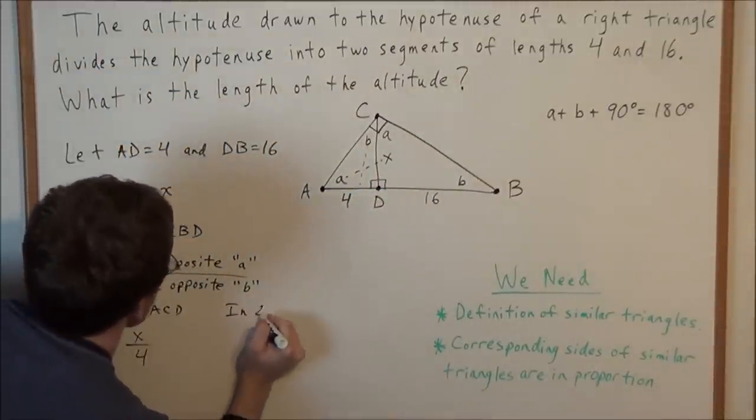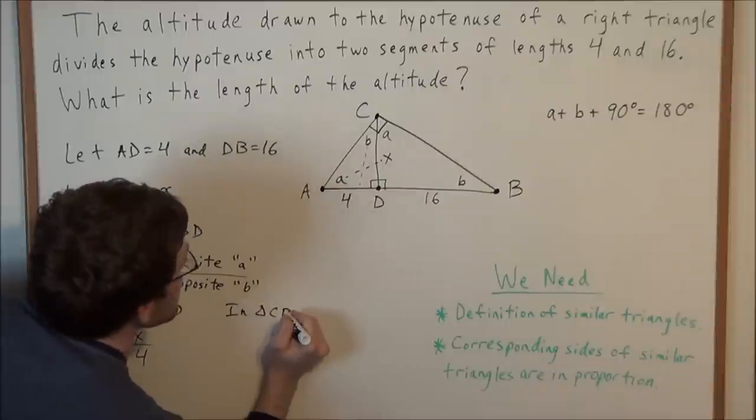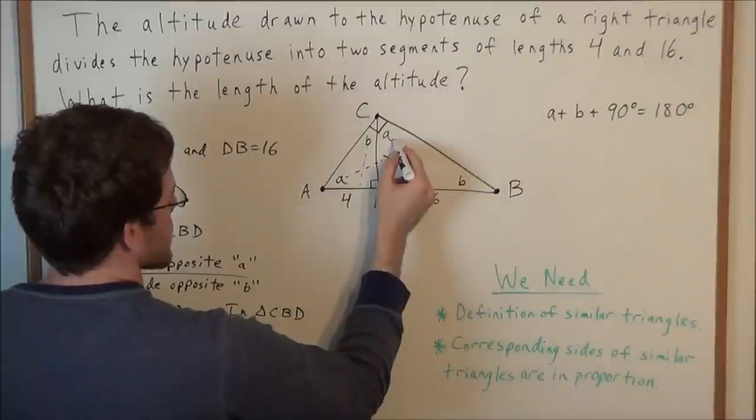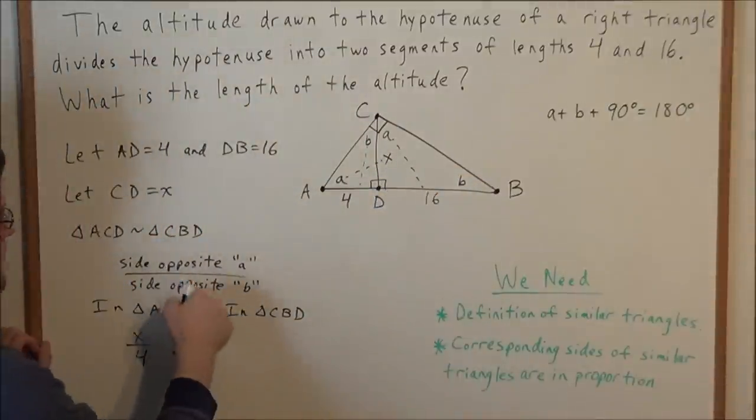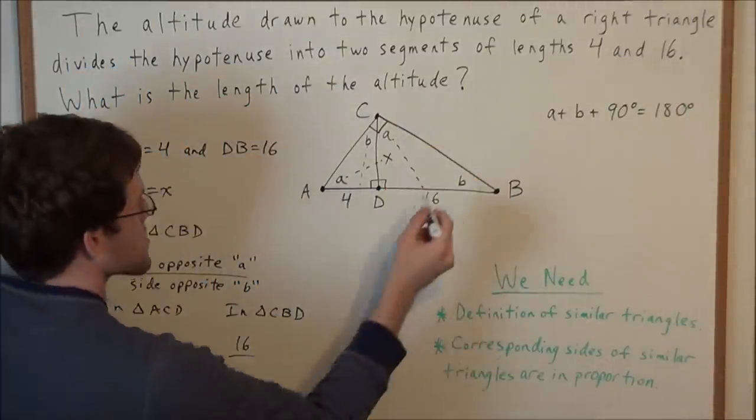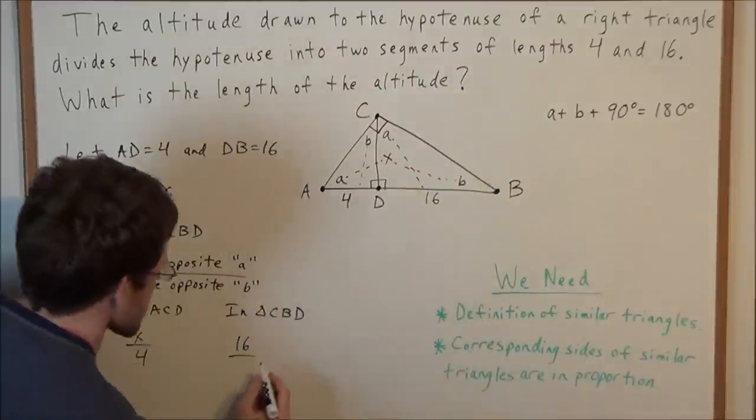And in triangle CBD, the side opposite a, remember we want to set up the same ratio. So the side opposite a is 16, and the side opposite b is x.